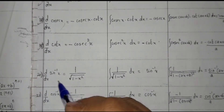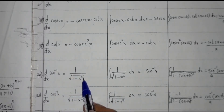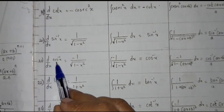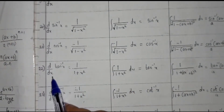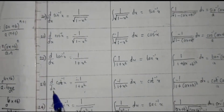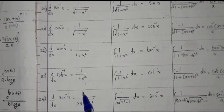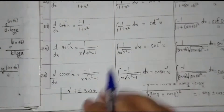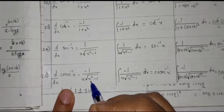Derivative of some inverse functions: d upon dx of sin inverse x is equal to 1 upon root of 1 minus x squared. d upon dx of cos inverse x is equal to minus 1 upon root of 1 minus x squared. d upon dx of tan inverse x is equal to 1 upon 1 plus x squared. d upon dx of cot inverse x is equal to minus 1 upon 1 plus x squared. d upon dx of sec inverse x is equal to 1 upon x root of x squared minus 1. And d upon dx of cosec inverse x is equal to minus 1 upon x root of x squared minus 1.